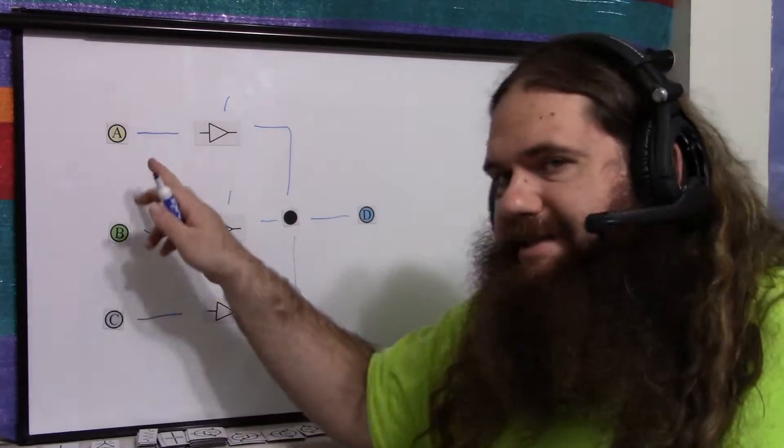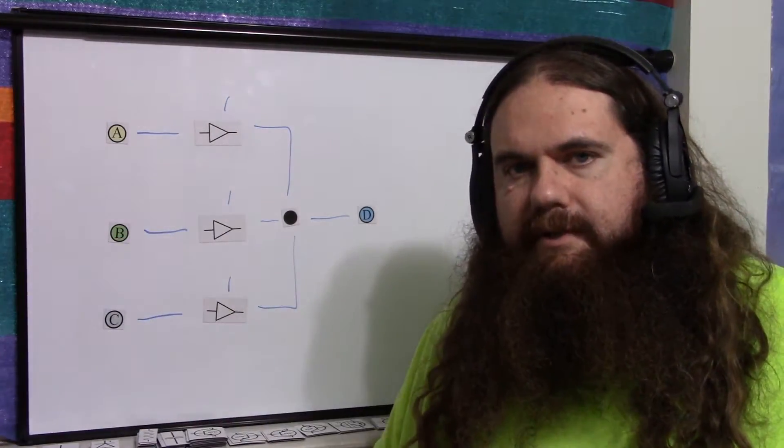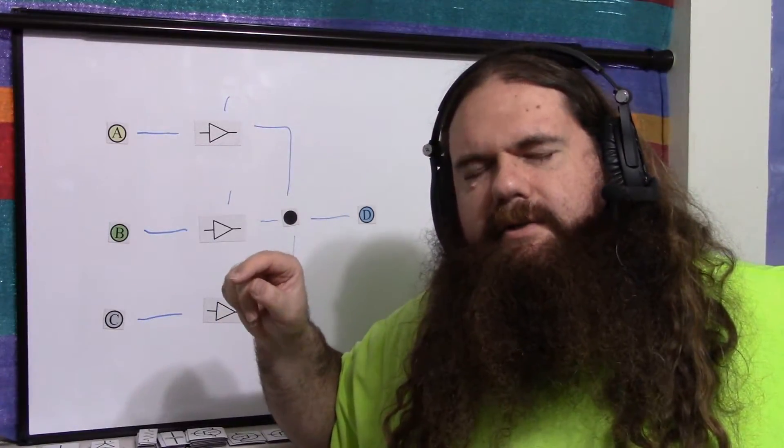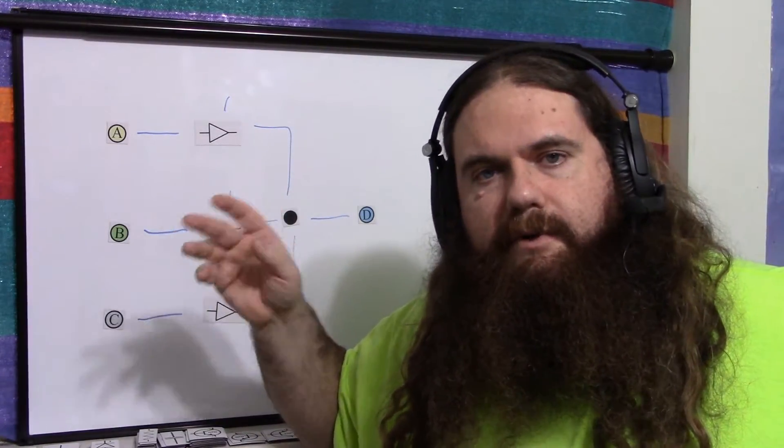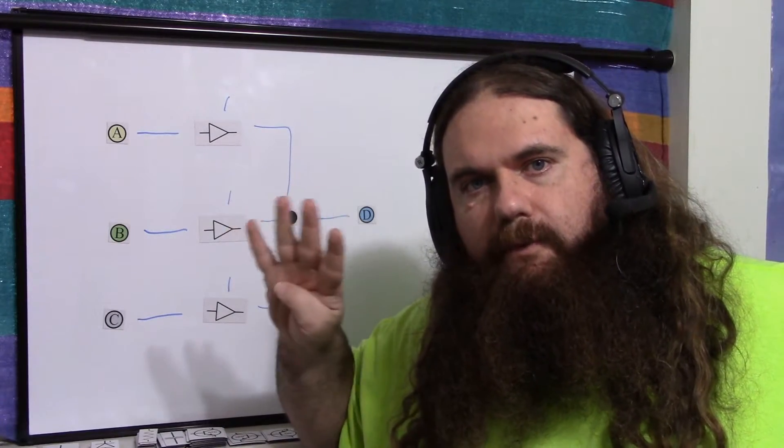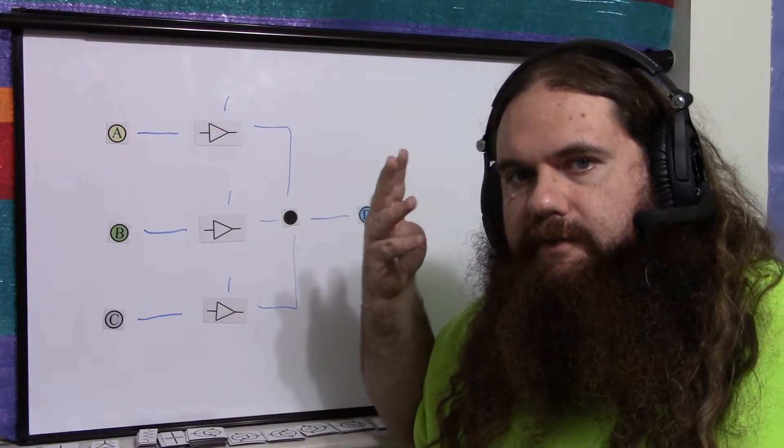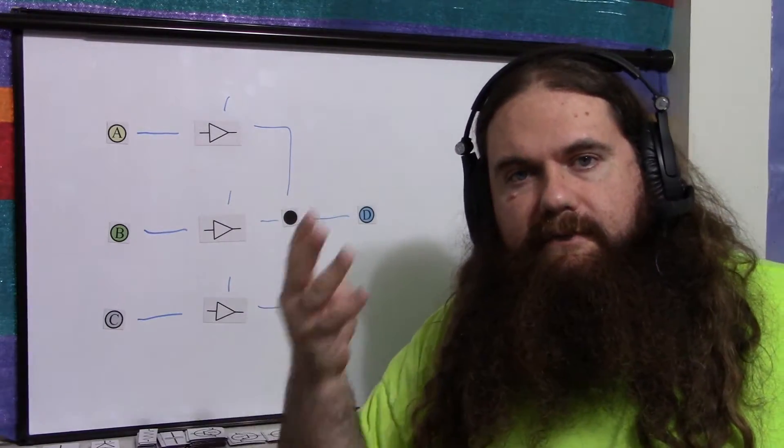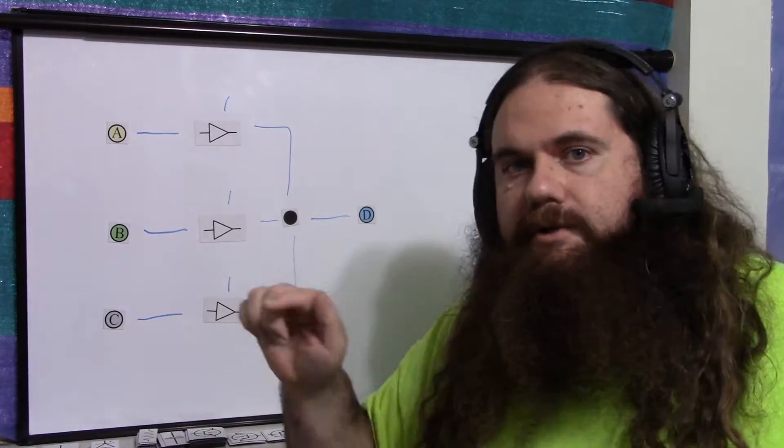So let's say you had 16 input signals. So you'd have one pin to read from 16 different things. But in binary, you can represent 16 values with only four bits.